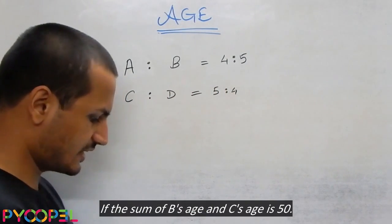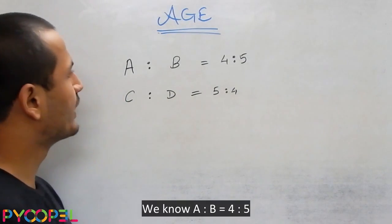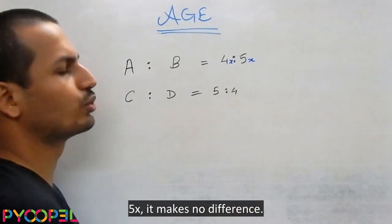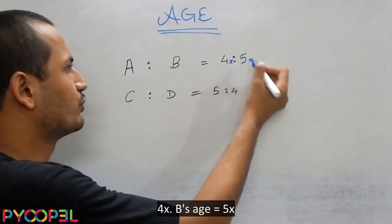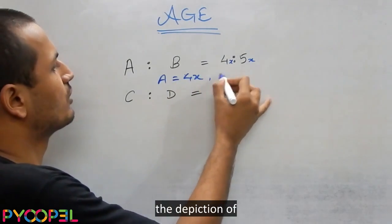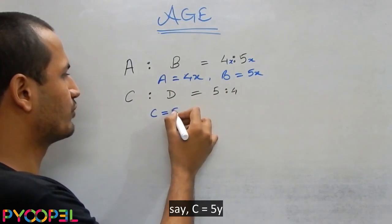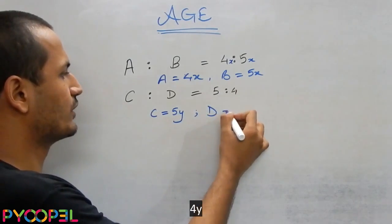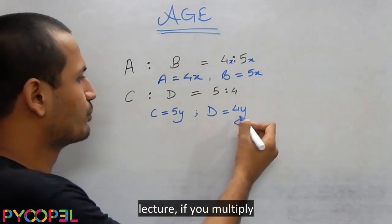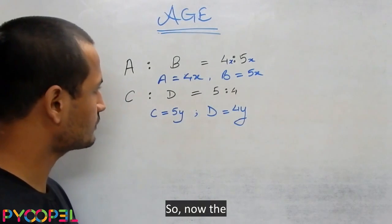If the sum of B's age and C's age is 50, let's do something over here first. We know A's age to B is equal to 4 is to 5, which means if I just say 4x, 5x, it makes no difference. So I can say A's age is equal to 4x, B's age is equal to 5x. Similarly we can say C is equal to 5y and D is equal to 4y, because as we discussed in the ratio proportion lecture, if you multiply the same number in the numerator and denominator, it does not change the ratio.